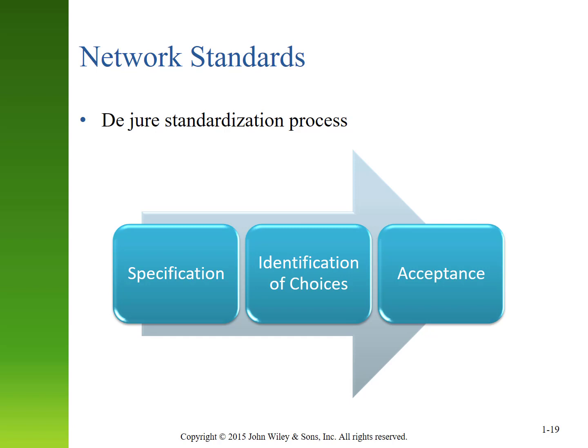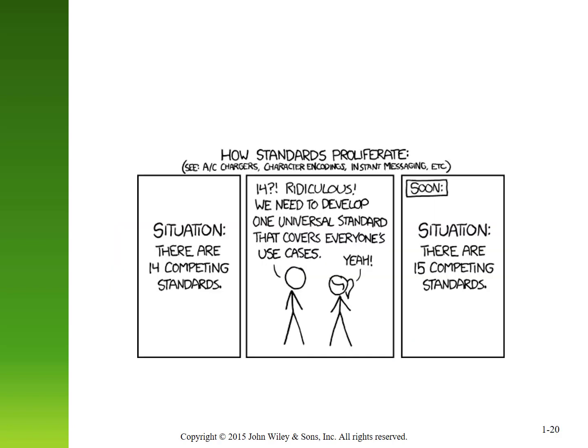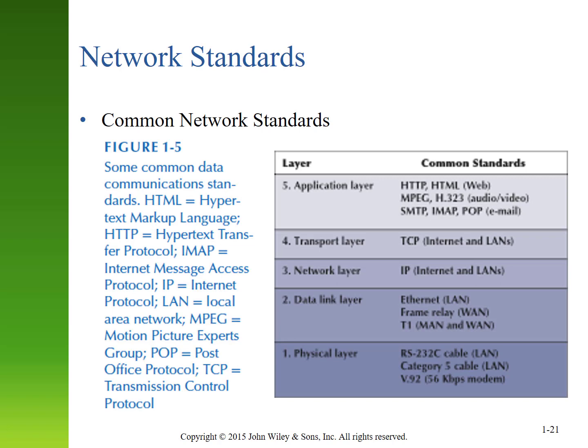The de jure standardization process involves an organization coming up with some specifications, identifying the possible choices that will satisfy those specifications, and then accepting the new changes to the standard as the latest version. It's a very rigorous process and often takes a long period of time. Because we exist in this environment with both de jure and de facto standards, there are often lots of competing standards in certain environments — which reminds me of this XKCD comic where somebody says we definitely could come up with one universal standard that covers everyone's use cases, which sounds brilliant, but typically just adds one more standard to the stack. We'll talk about some of these common standards when we get to the specific layer discussions in later chapters.